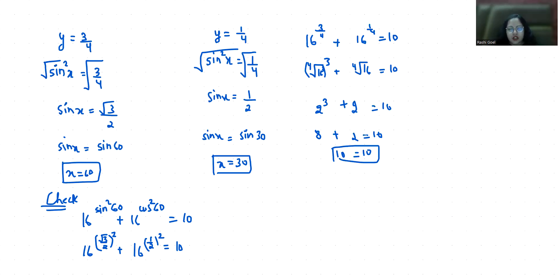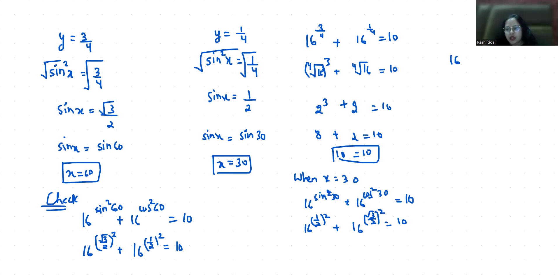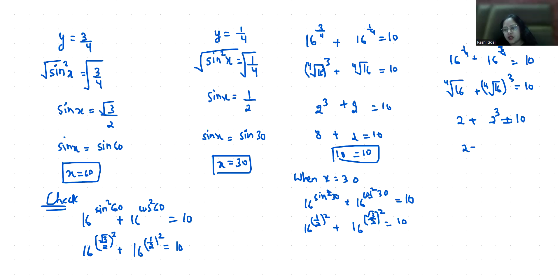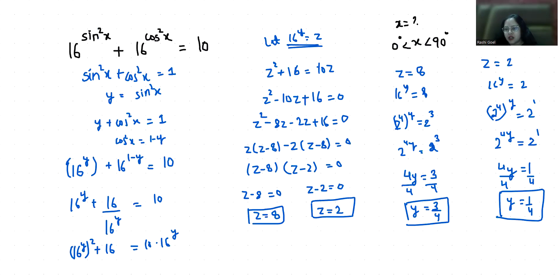Now checking x equals 30°: 16^(sin²30°) plus 16^(cos²30°) equals 16^(1/4) plus 16^(3/4). The fourth root of 16 is 2, and the fourth root of 16³ is 8. So 2 plus 8 equals 10. Both cases are verified, and the condition that x is greater than 0 and less than 90 is also satisfied.